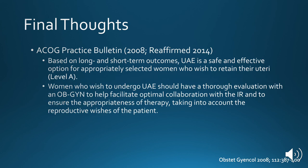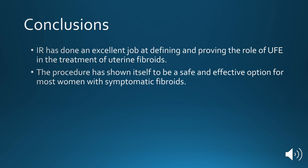Finally, in 2008 and reaffirmed in 2014, ACOG changed their position again. Based on long and short-term outcomes, UAE is a safe and effective option for appropriately selected women who wish to retain their uterus. This was given a level A recommendation. Women who wish to undergo embolization should have a thorough evaluation with an OB-GYN to help facilitate optimal collaboration with the interventional radiologist and to ensure the appropriateness of therapy, taking into account the reproductive wishes of the patient. In conclusion, IHR has done an excellent job at defining and proving the role of UFE in the treatment of uterine fibroids, and the procedure has shown itself to be a safe and effective option for most women with symptomatic uterine fibroids.